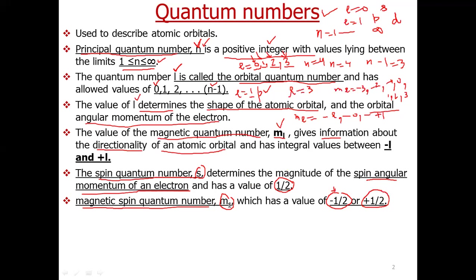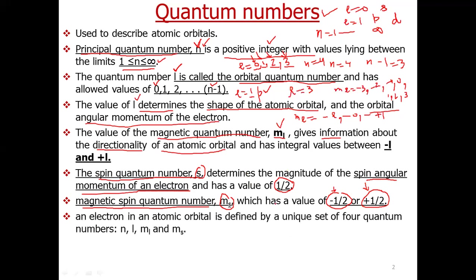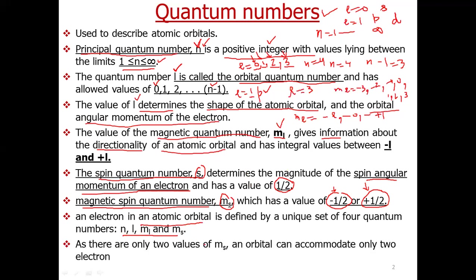ms = −½ corresponds to anti-clockwise spin and ms = +½ corresponds to clockwise spin of the electron around its axis. In order to define an electron in an atomic orbital, we need 4 quantum numbers: n, l, ml, and ms. Since we can have only 2 values of ms, an orbital can have a maximum of only 2 electrons.